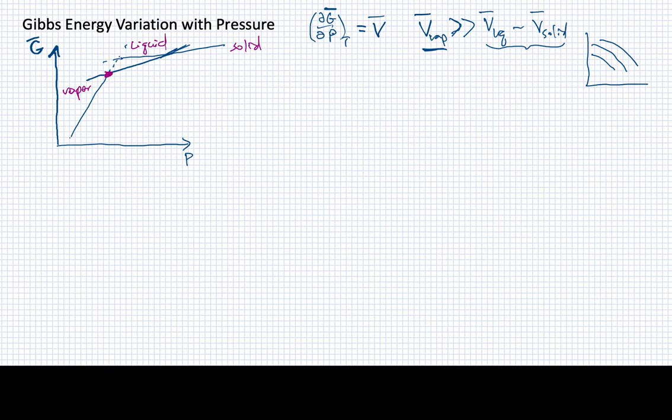Now once again, we're seeing positions of intersections between these curves. And remember, those intersections always represent cases where two of the phases, the Gibbs energies of two of those phases, are in equilibrium. So for example, one intersection might be between the Gibbs, the molar Gibbs energy of the vapor and the molar Gibbs energy of the liquid. So in this case, we're seeing this is the point of the phase equilibrium between the vapor and the liquid or a condensation point or a vaporization point.